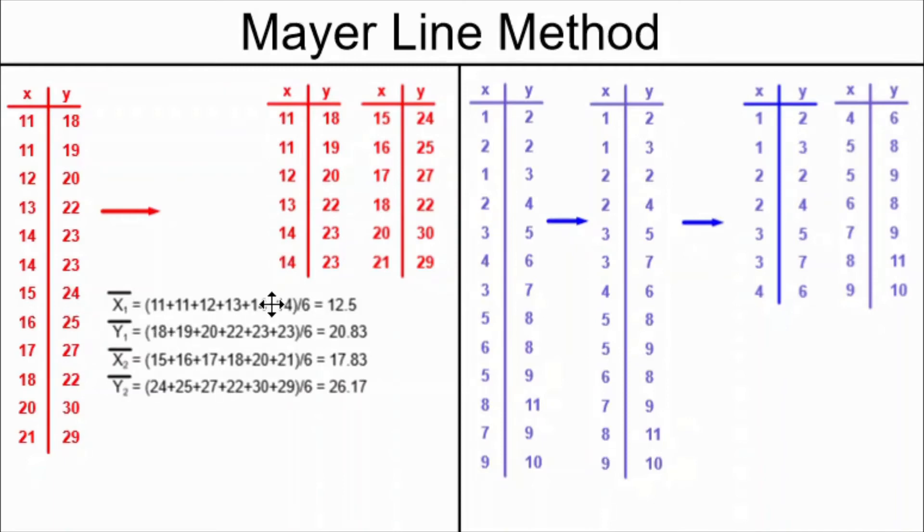Similarly, x bar 2 is the average of the x values in the second table, and y bar 2 is the average of the y values in the second table.